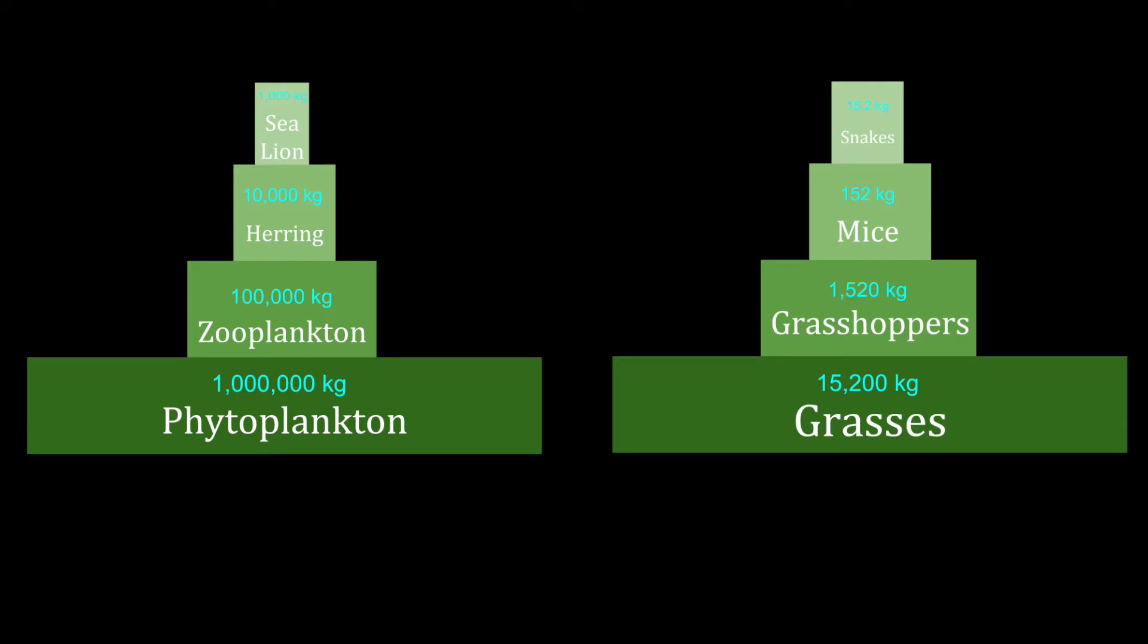With a million kilograms is phytoplankton, then with 100,000 kilograms is zooplankton, then with 10,000 kilograms is herring, and finally with 1,000 kilograms is sea lion. So the zooplankton is eating the phytoplankton, then the herring is eating the zooplankton, and then the sea lion is eating the herring.